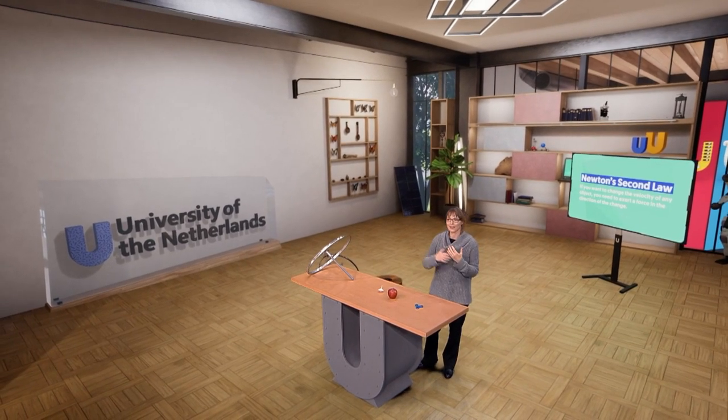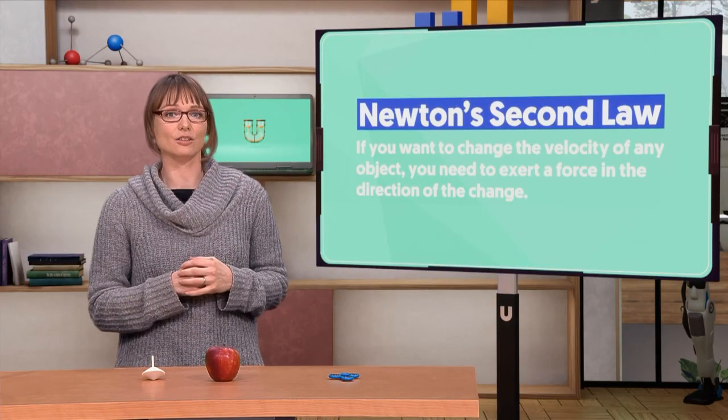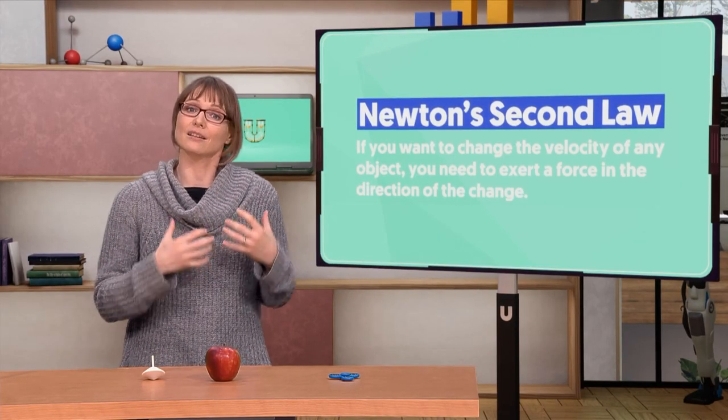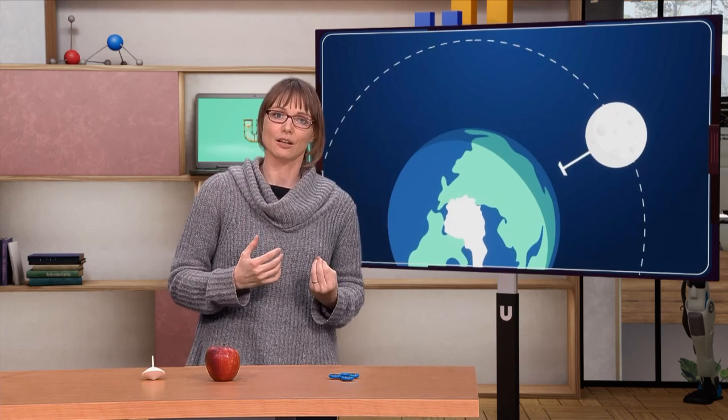Is the Moon going faster and slower? Well, not much, but it is constantly changing its velocity, namely the direction of velocity. And why is it doing that? Well, because there's a force acting on it, the gravity of Earth.